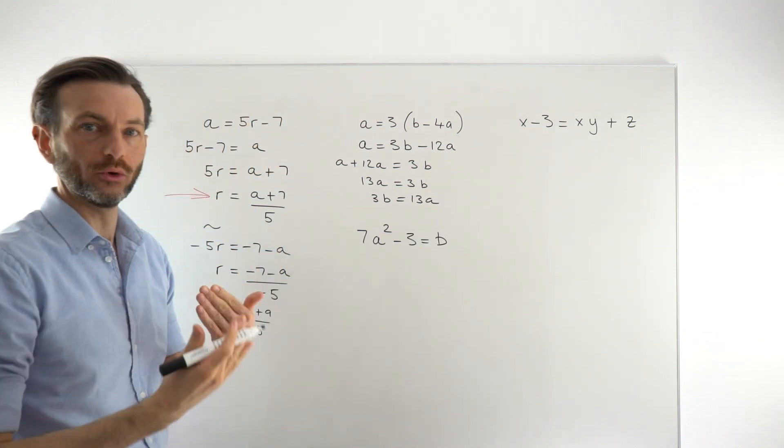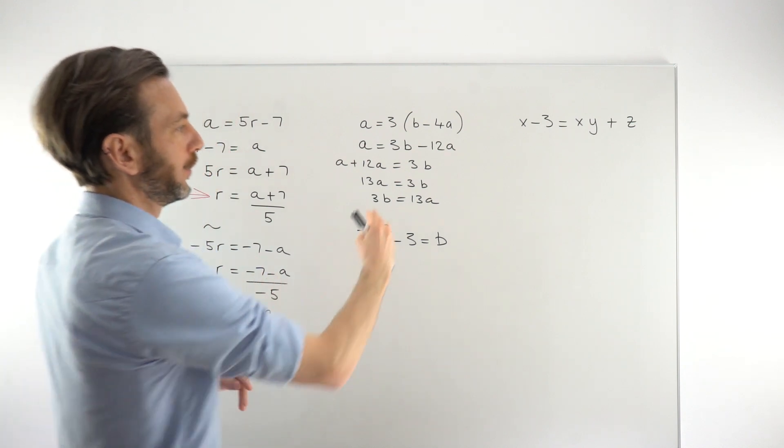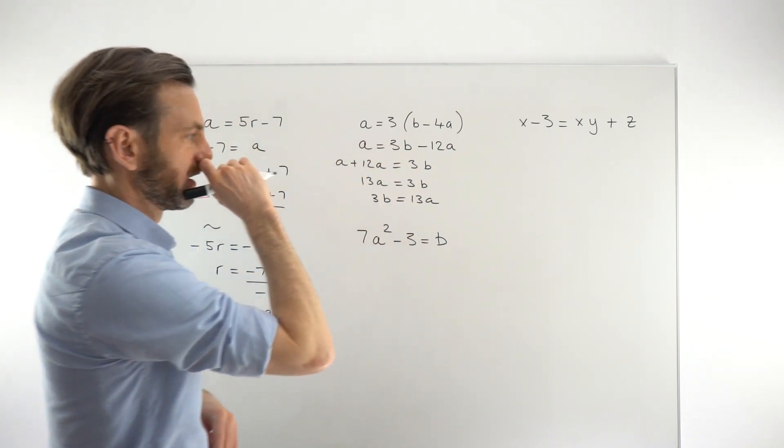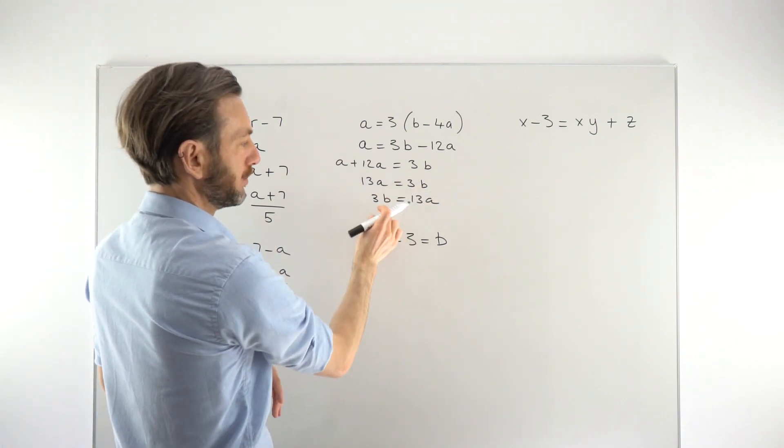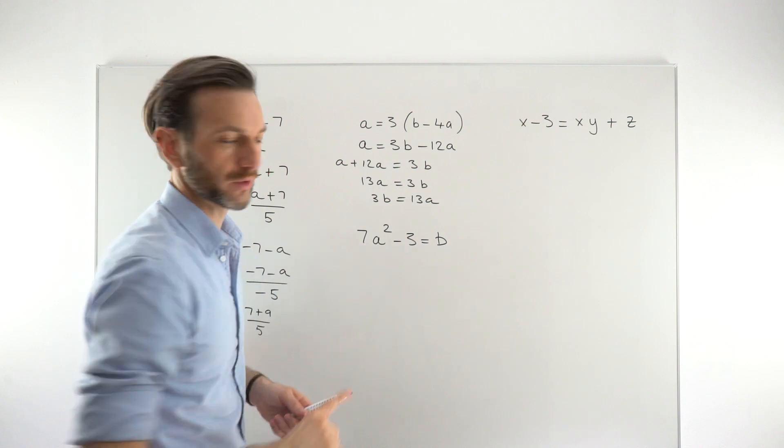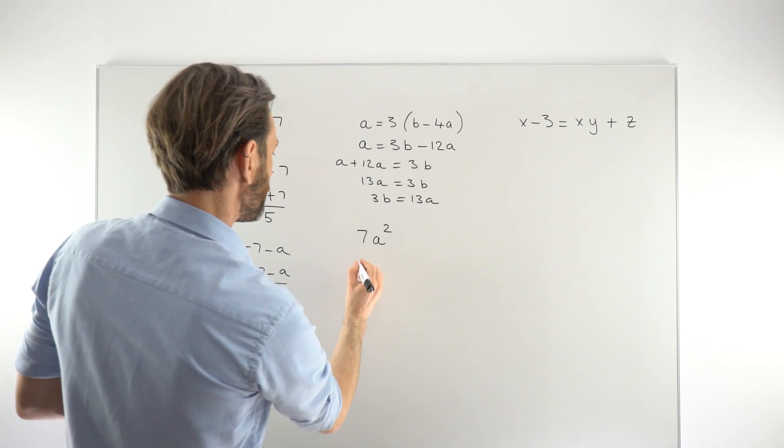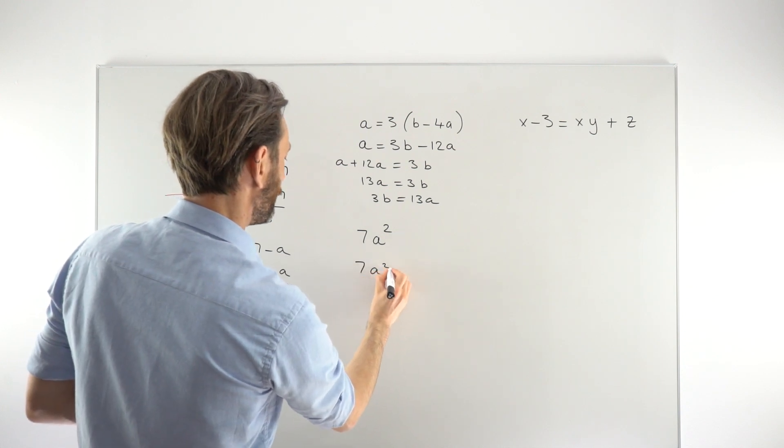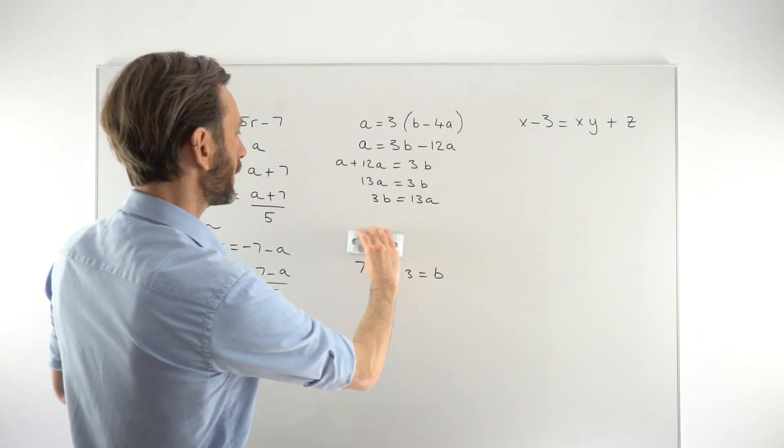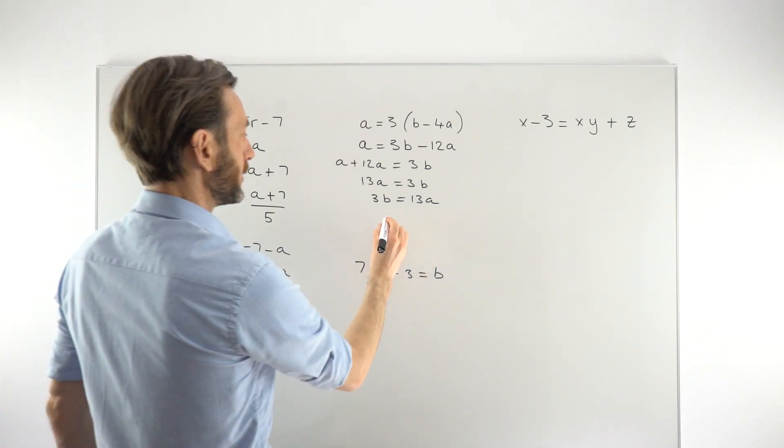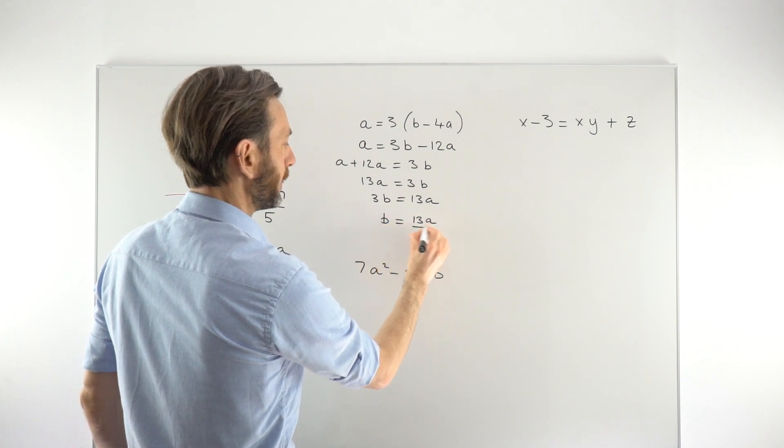Spinning the equation around at this point to get the B on the left-hand side, so we get 3B equals 13A. You'll find your own kind of style with these as well. There's more than one way to do them. You don't necessarily have to follow exactly the same method as everyone else. Not everyone will spin that around at that point. That's up to you. I just did that to get the B on the left. Then just dividing both sides by 3 and we get B equals 13A over 3.